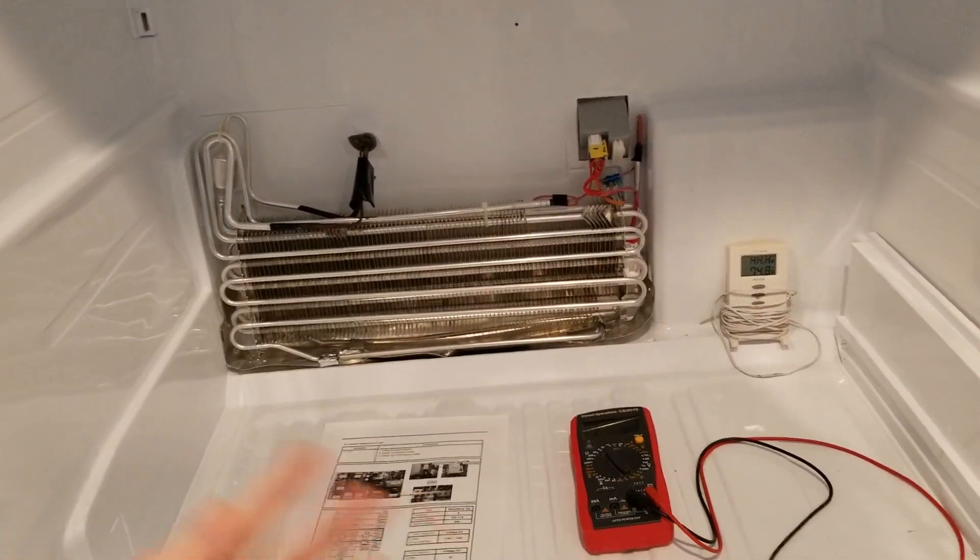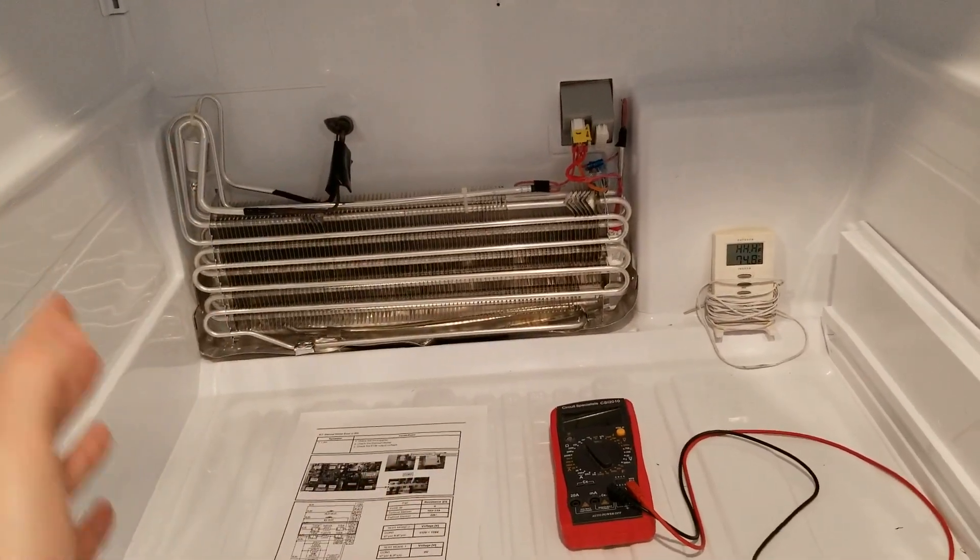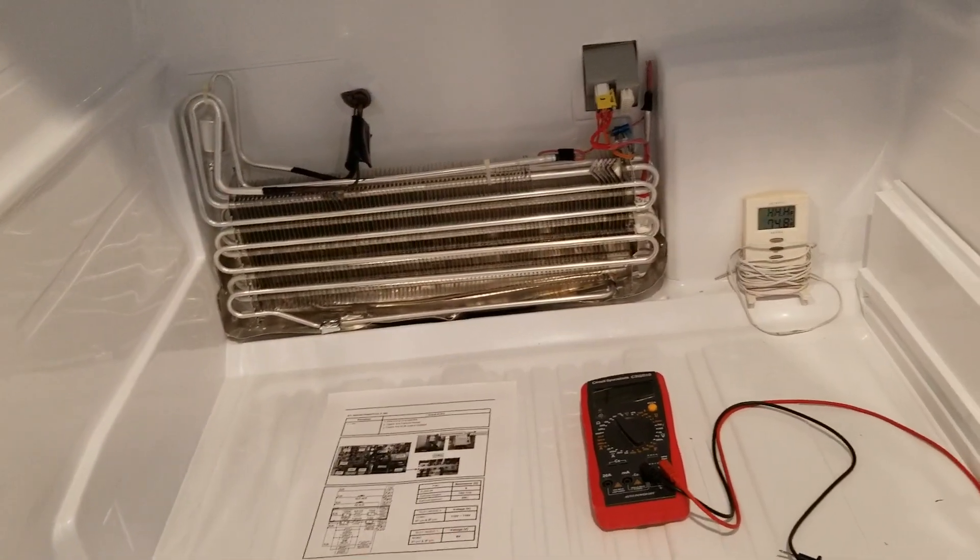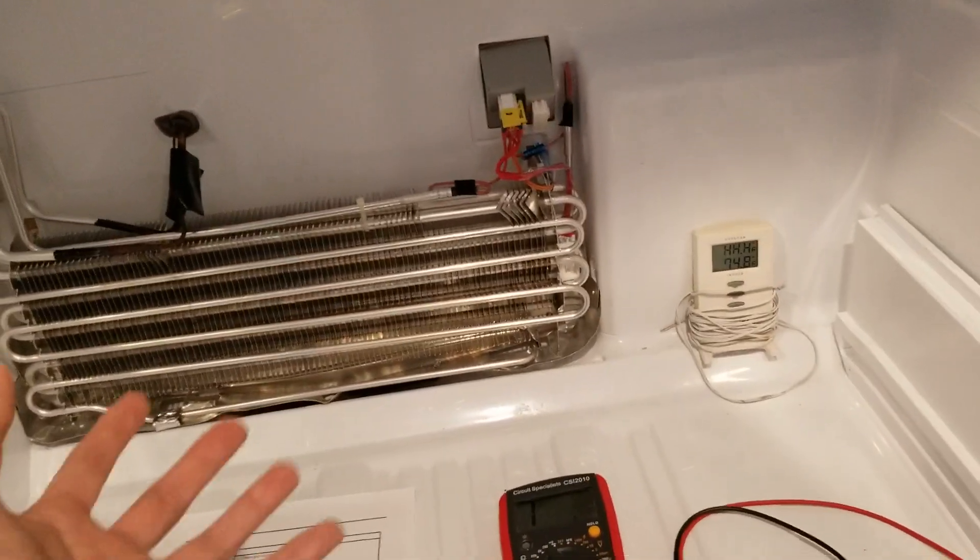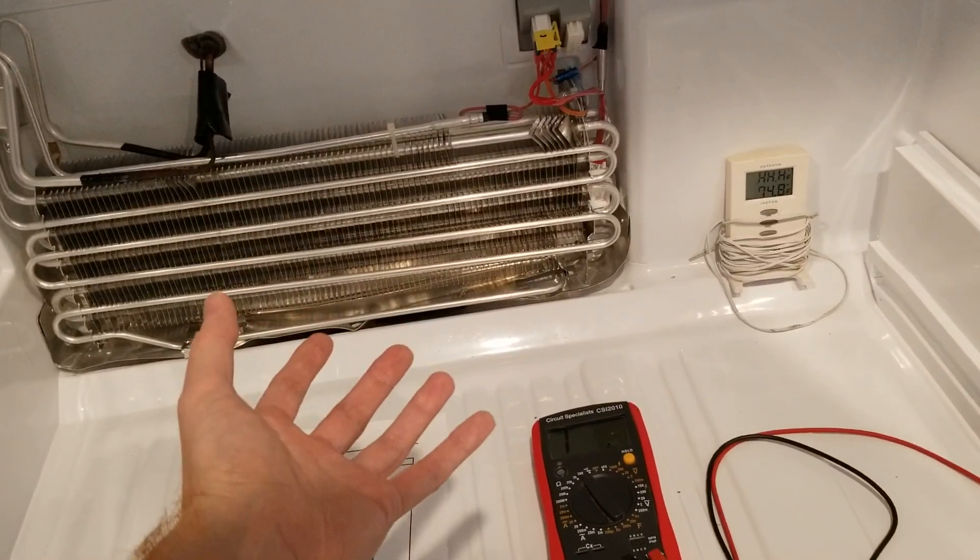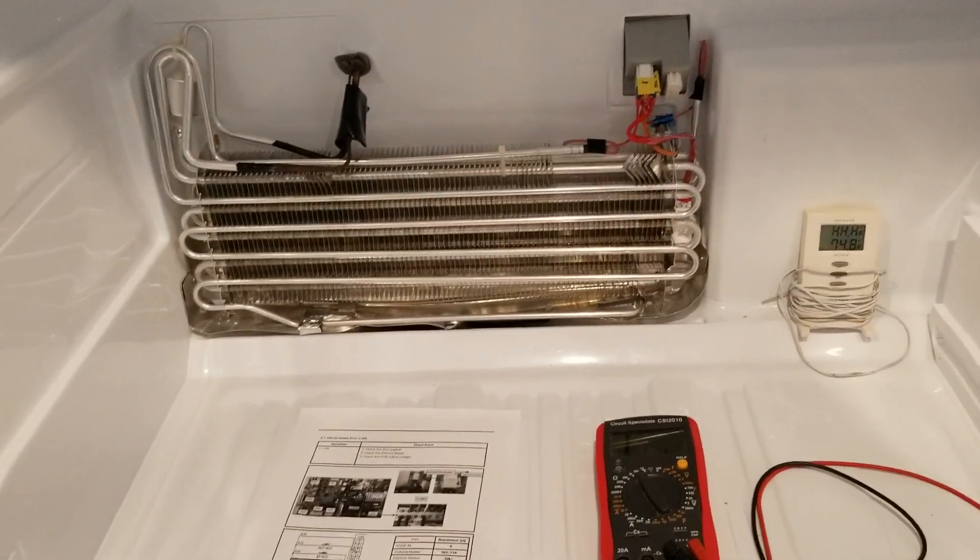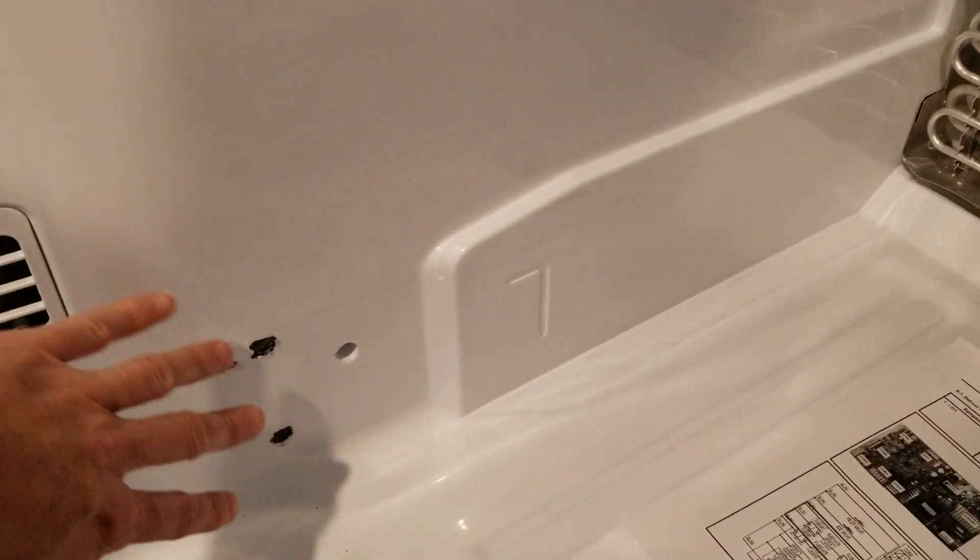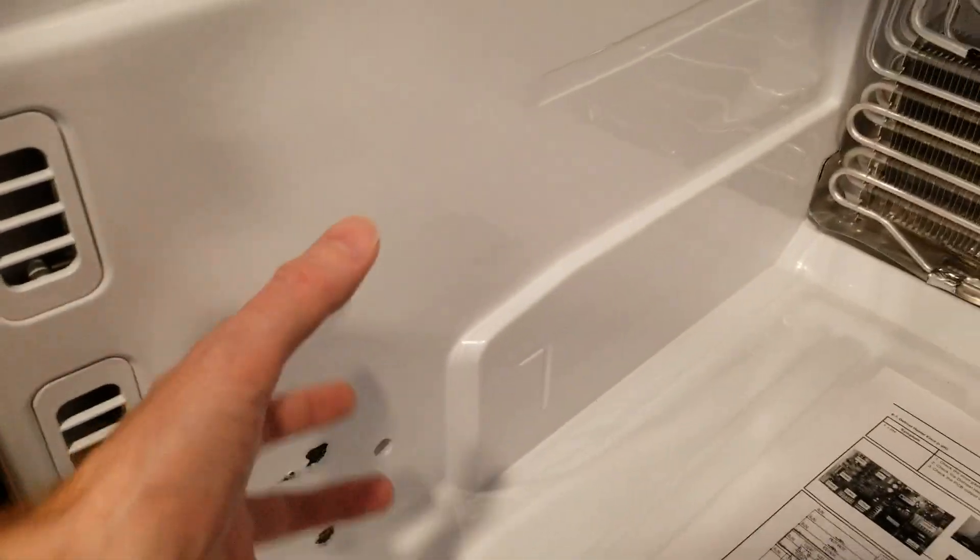Let everything sit for about a day so that it all defrosts out, and then you won't have to worry about all the ice when you disassemble. The drawers here will just lift right up and out. They're not even screwed into anything. The rails will have two screws here and here, and then that should pop right out.